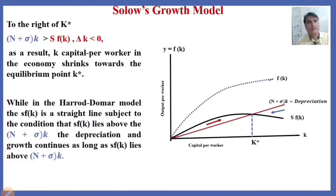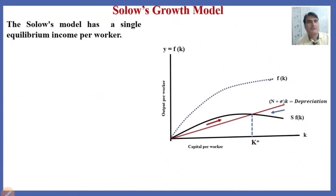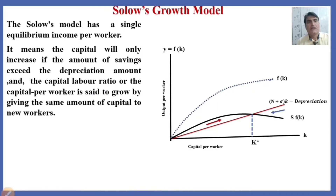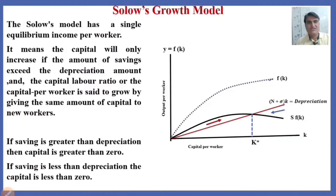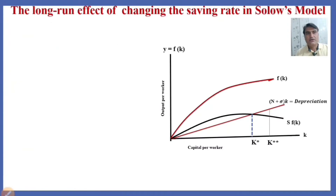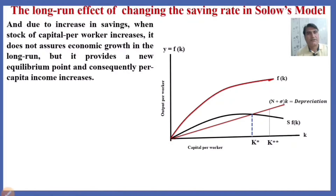The Harrod-Domar model states that once savings lie above depreciation, growth continues indefinitely. Solow's model, however, has a single equilibrium income per worker — capital will only increase if savings exceed depreciation, and capital per worker grows only by providing the same amount of capital to new workers. If saving is greater than depreciation, then the change in capital is positive; if saving is less than depreciation, the change in capital is negative.